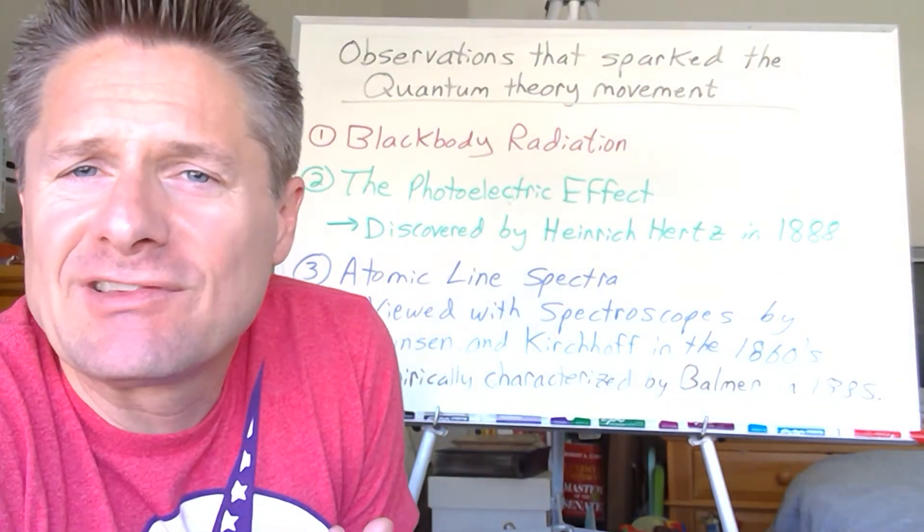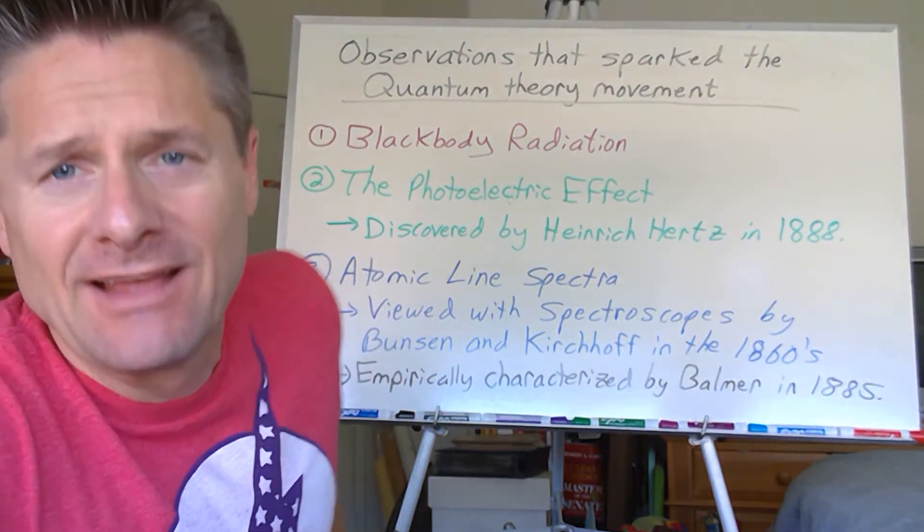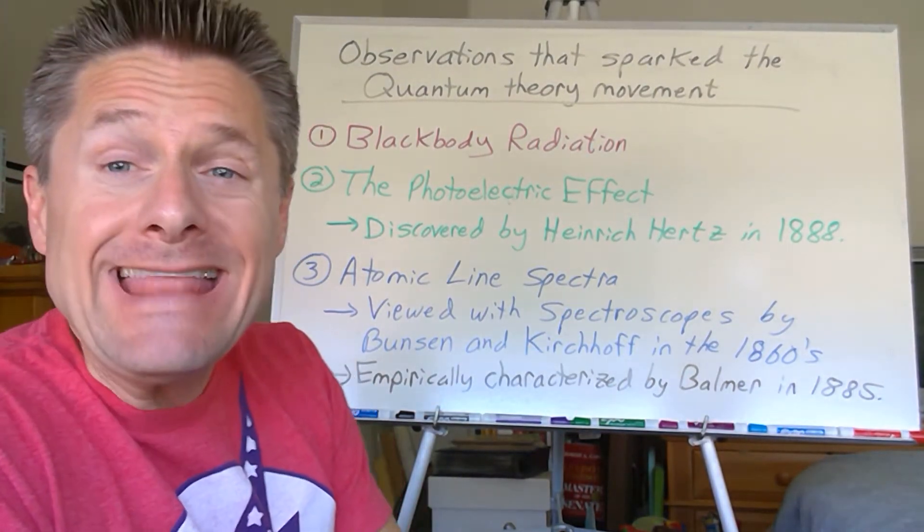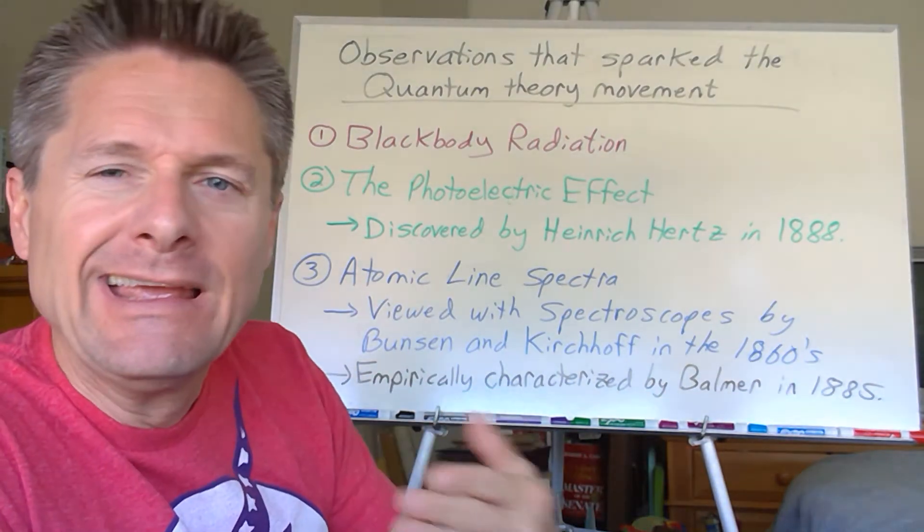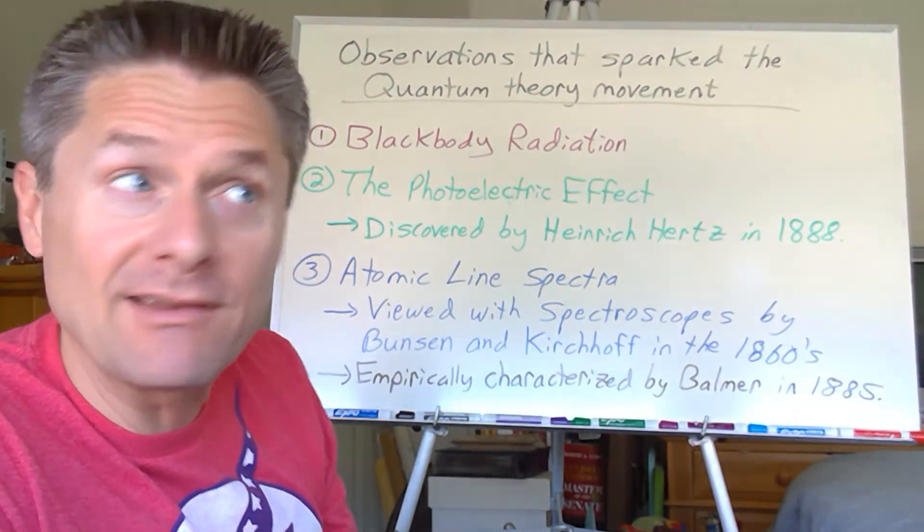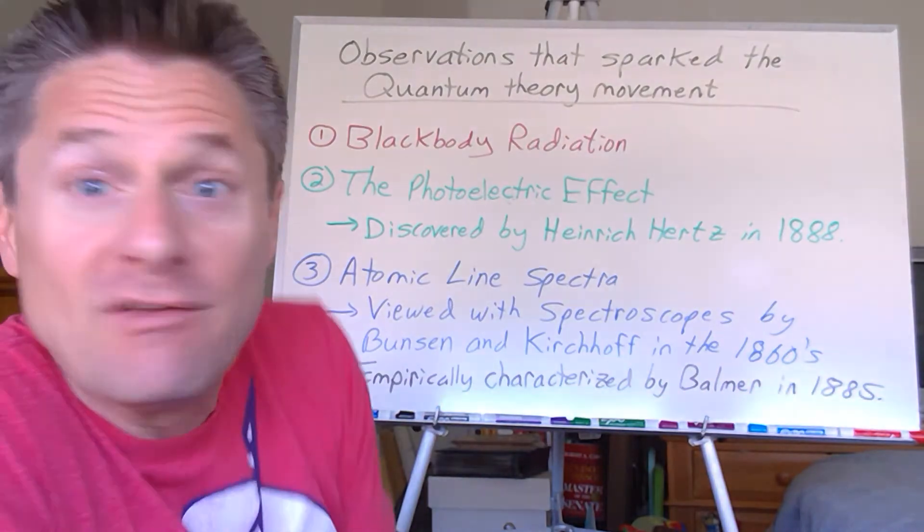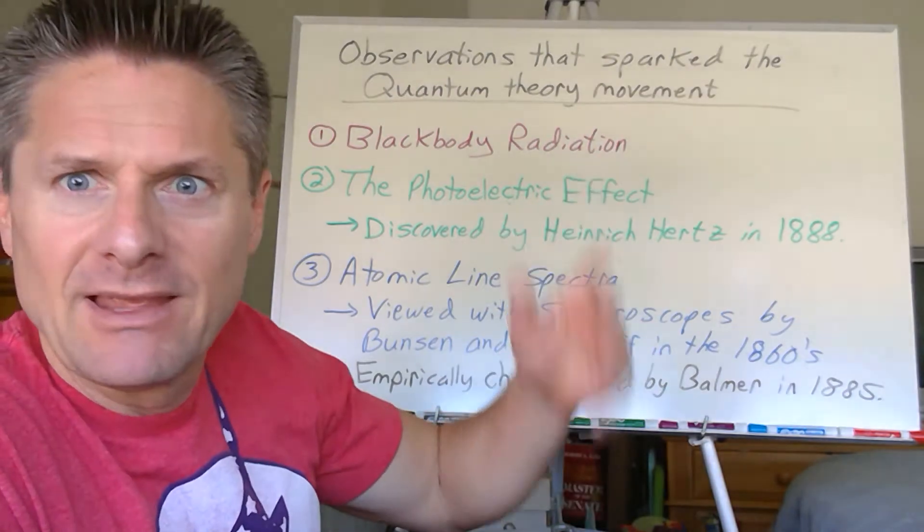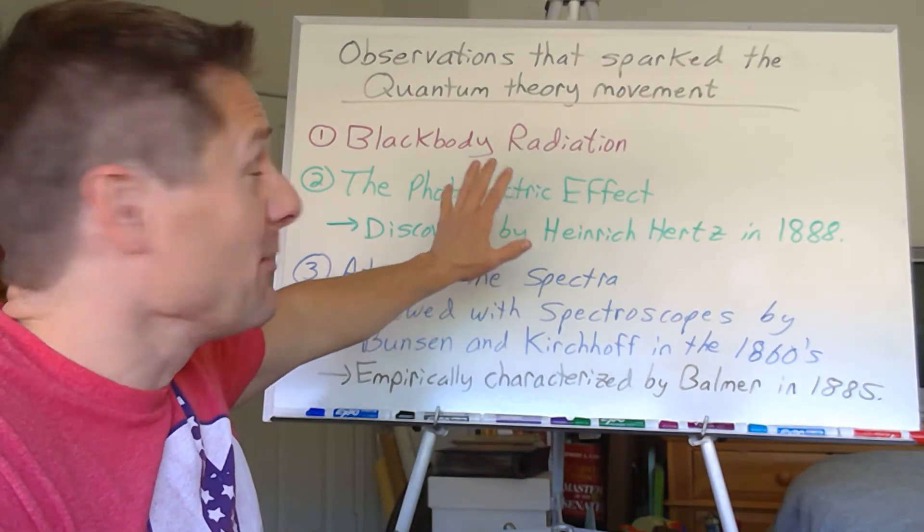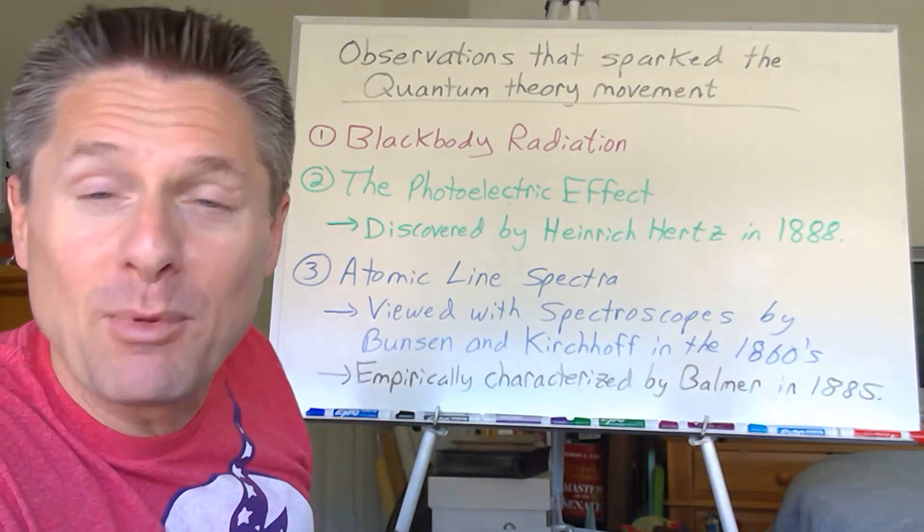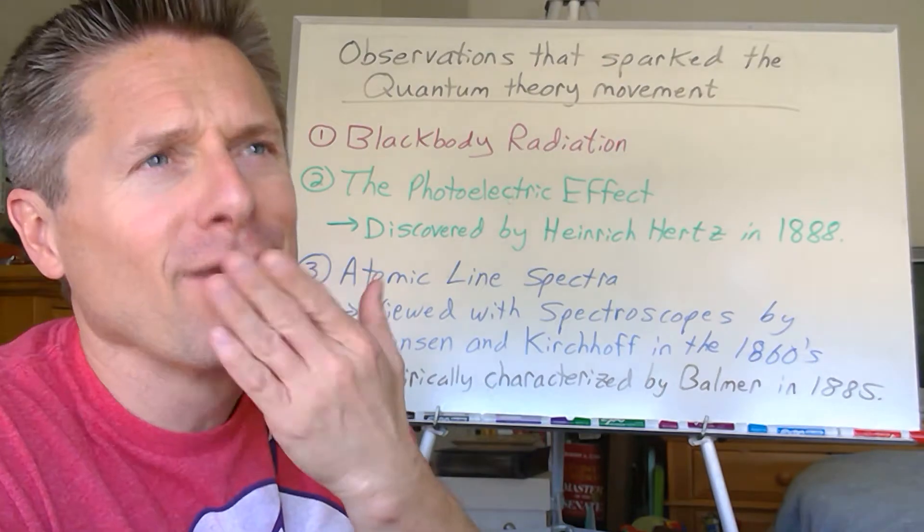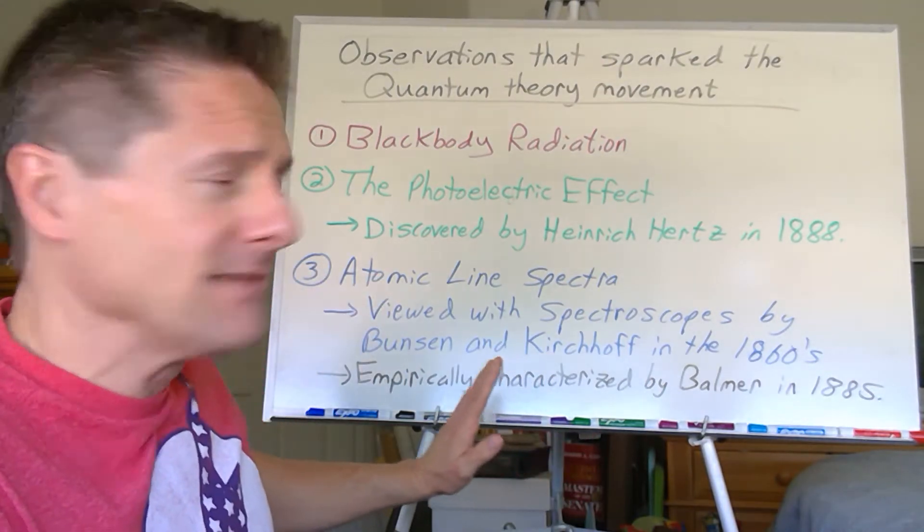So here are the three observations slash experiments that really spun these classical physics for a loop. Not in any particular order I guess, but the order I do it helps tell the story a little better. I'm just going to tell some grand overarching quantum development story. A lot of history and unfortunately a lot of history I'm going to leave out too. There's going to be so many Nobel prizes sprinkled all over the place in the late 1800s, early 1900s.